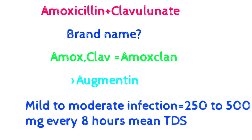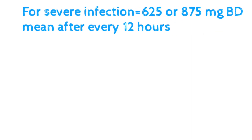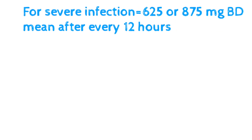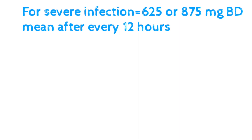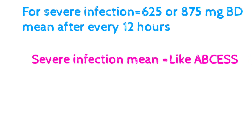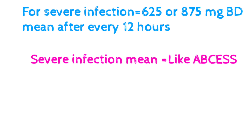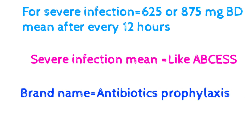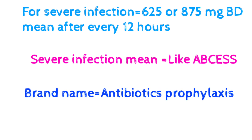Augmentin dosing: for mild to moderate infections, give 250 to 500 mg TDS, meaning three times a day. For severe infections, give 625 to 875 mg BD, meaning every 12 hours. This combination is used for severe infections such as abscess.